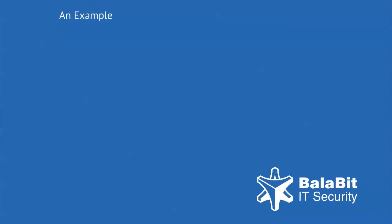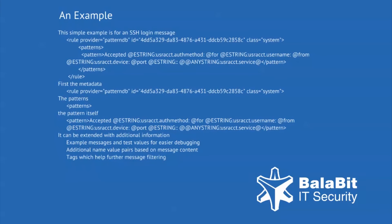Here is an example of a pattern for an SSH login. First we see the metadata, then there is a statement to set the patterns, and then the pattern itself. This example could be extended with additional information, like example messages and test values for easier debugging. Additional name-value pairs based on message content can help further filter messages.